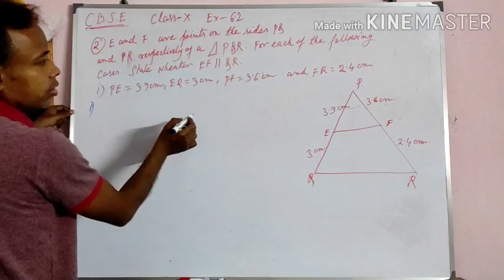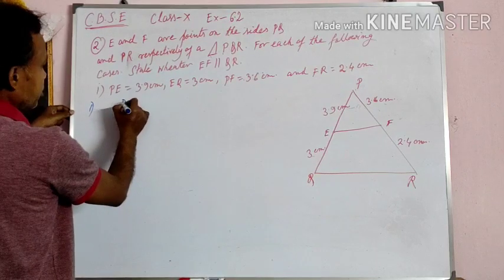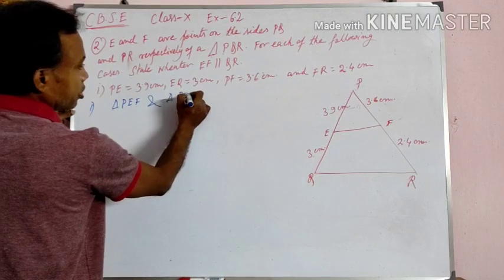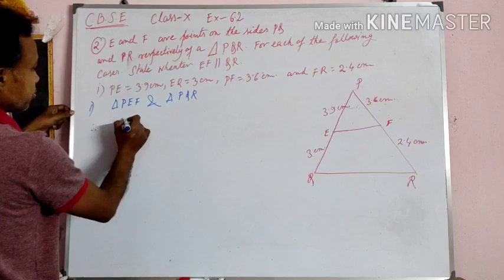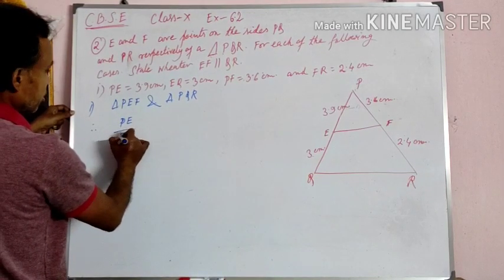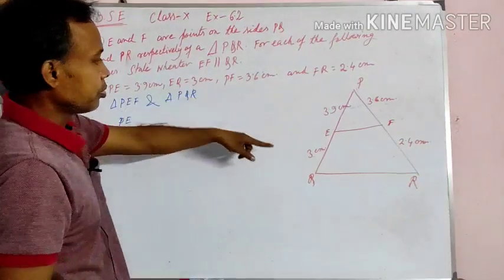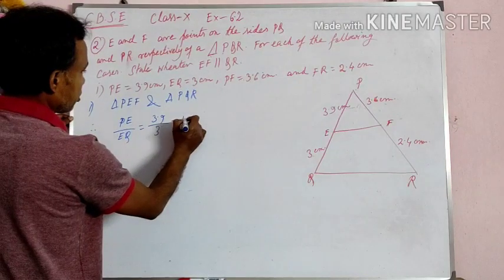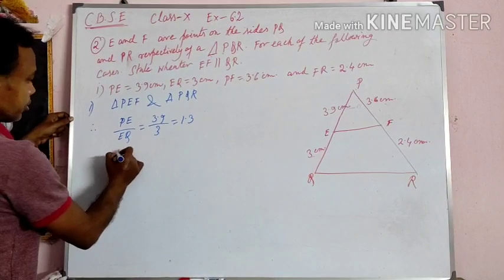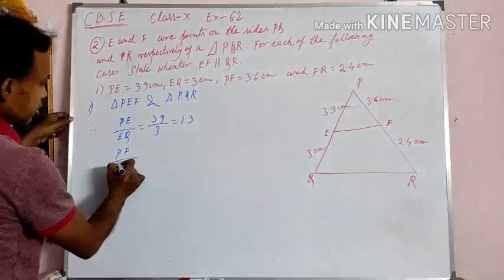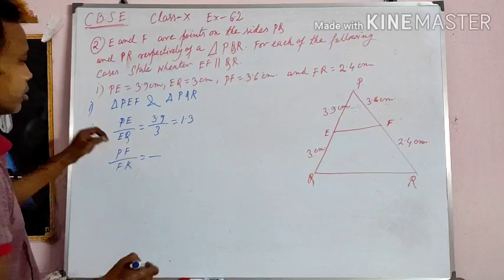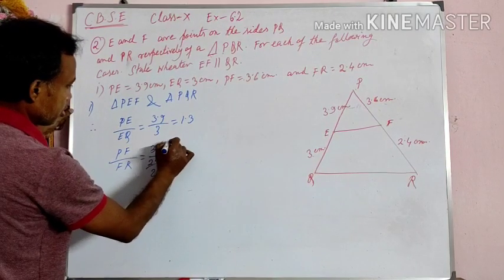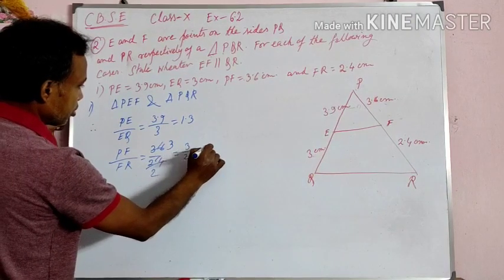In triangle PEF and triangle PQR, let us check the ratio. PE by EQ equals 3.9 divided by 3, which equals 1.3. And PF by FR equals 3.6 divided by 2.4, which equals 3 by 2, equals 1.5.